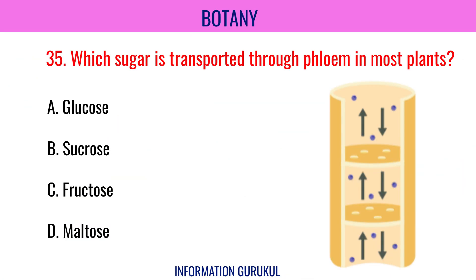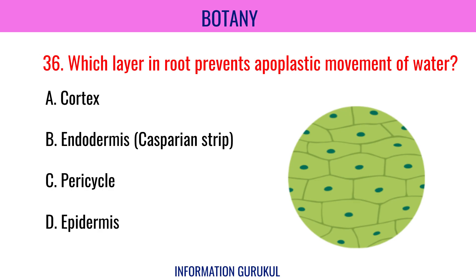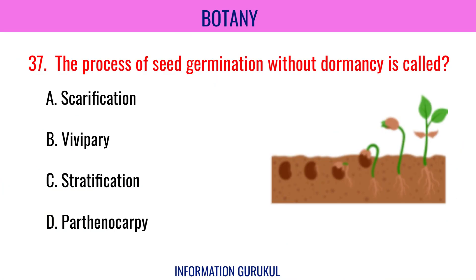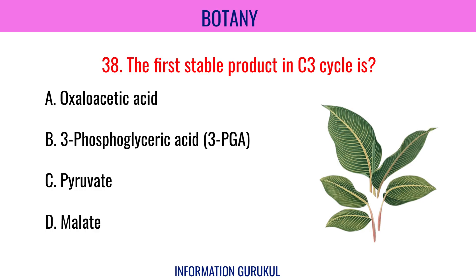Which sugar is transported through phloem in most plants? Sucrose. Which layer in the root prevents apoplastic movement of water? Endodermis. The process of seed germination without dormancy is called vivipary. The first stable product in the C3 cycle is 3-phosphoglyceric acid.